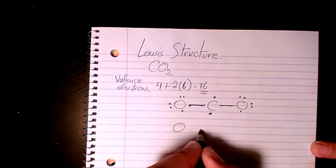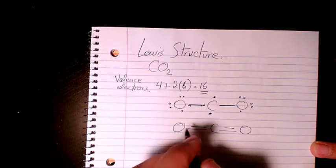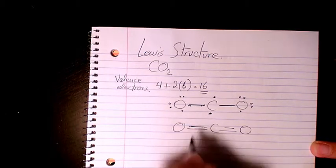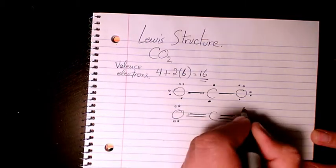If we have it as double bond in between both of them, so as you see here it's pretty much trial and error. So we have double bond in here, double bond in here, so we have two pairs of lone pair electrons here.